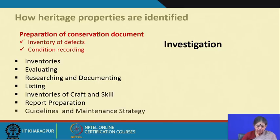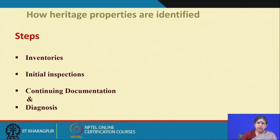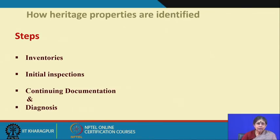We will take these one by one, including the guidelines and maintenance strategy for future action — short-term and long-term. The steps are: inventories, initial inspection, and continuing documentation, because it is a continuing process; once work starts, many things can come up. Diagnosis is a very important part — until and unless we understand the real cause of the damage, we cannot suggest methods to mitigate it or what steps to be taken.